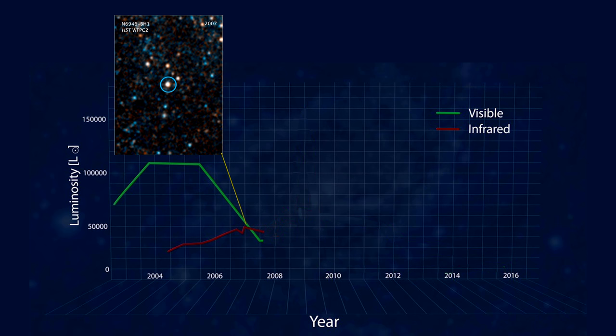In 2009, the star shot up in brightness to become over one million times more luminous than our Sun for several months. The expectation was it was about to supernova.